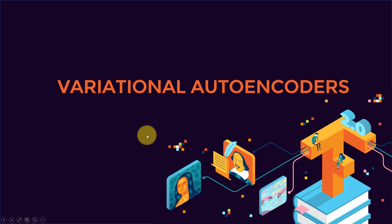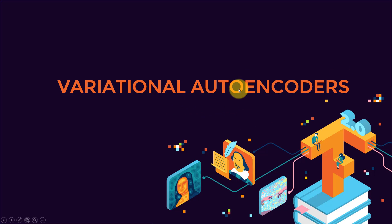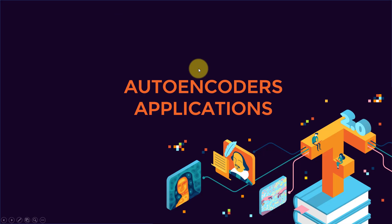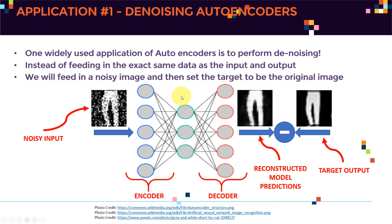In the next lecture, I'll walk you through an advanced version of autoencoders known as variational autoencoders, which overcome many issues with basic or vanilla autoencoders. To recap this lecture, we covered the basic applications of autoencoders: image denoising by passing in a noisy image and reconstructing the clean version.